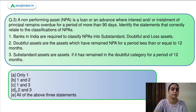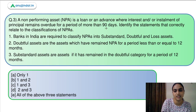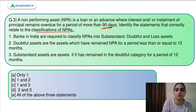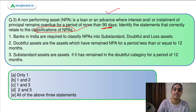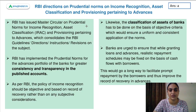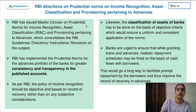Moving to the next topic and question: A non-performing asset (NPA) is a loan or advance where interest or installment of the principal remains overdue for more than 90 days. We are asked to identify the statements correctly related to the classification of NPAs. The RBI recently came up with master directions related to this — master directions which talk about how you need to classify these assets, how to create provisions against them, and how to recognize the income associated.